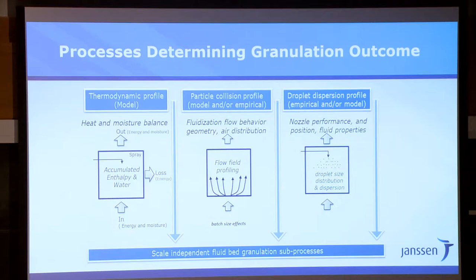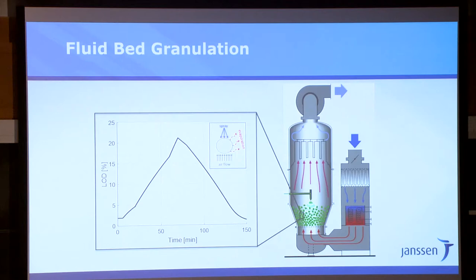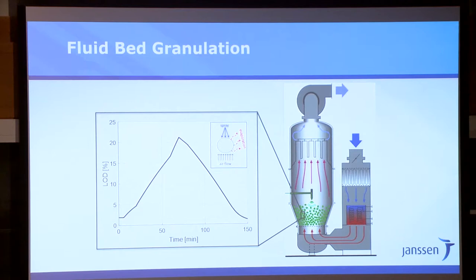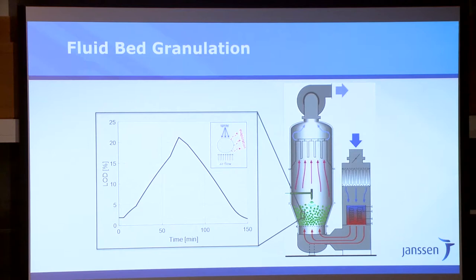The same thing applies to the liquid that you spray — you're making droplets. You need droplets big enough to make it all the way to the particles and wet them, but not too big. You don't want to make soup, and you don't want them too small — then it all evaporates and you're just making dust instead of granulating your product. We took all three of these elements together and made our basic model. There's a schematic on the right of how the equipment looks, with the green particles and the spray arm on top. On the left is the typical profile of the LOD — the moisture content of the bed — which determines how things are going to granulate.